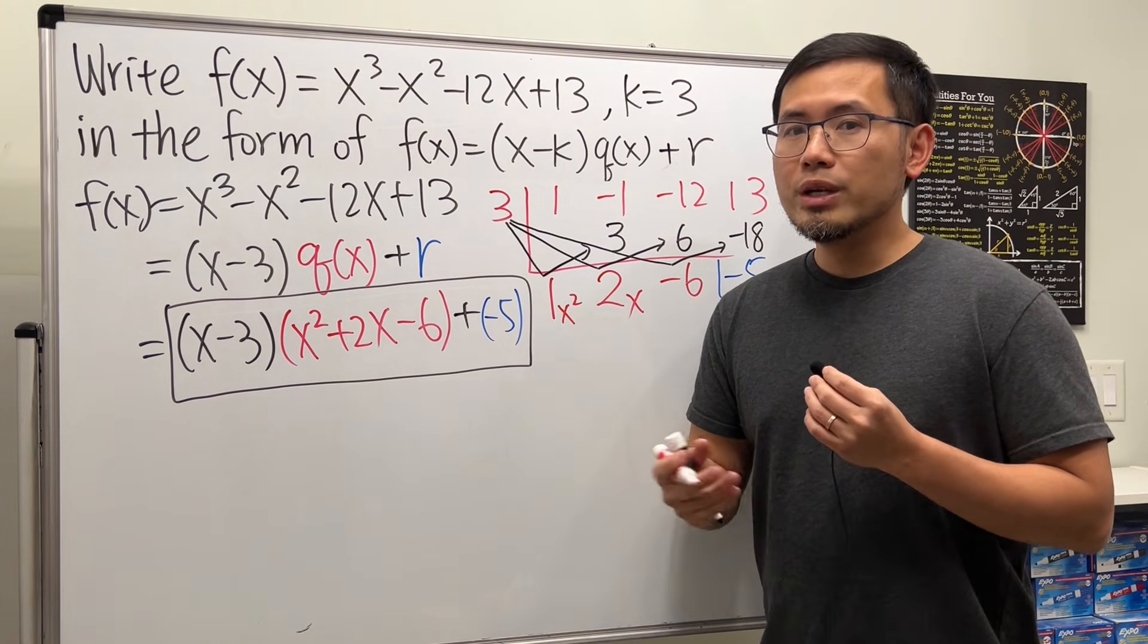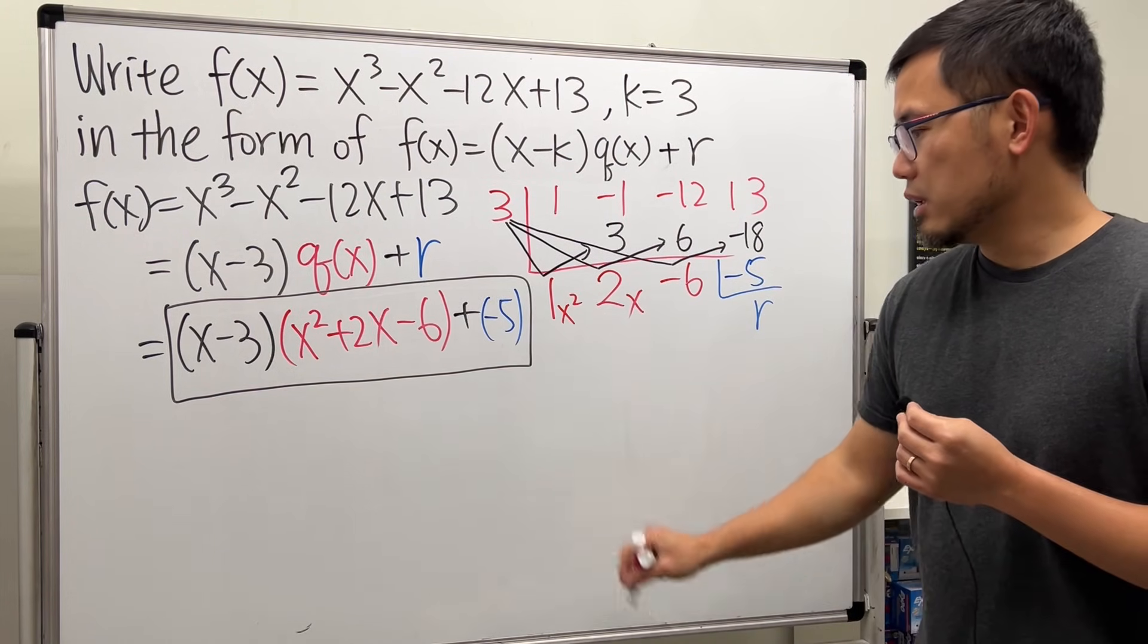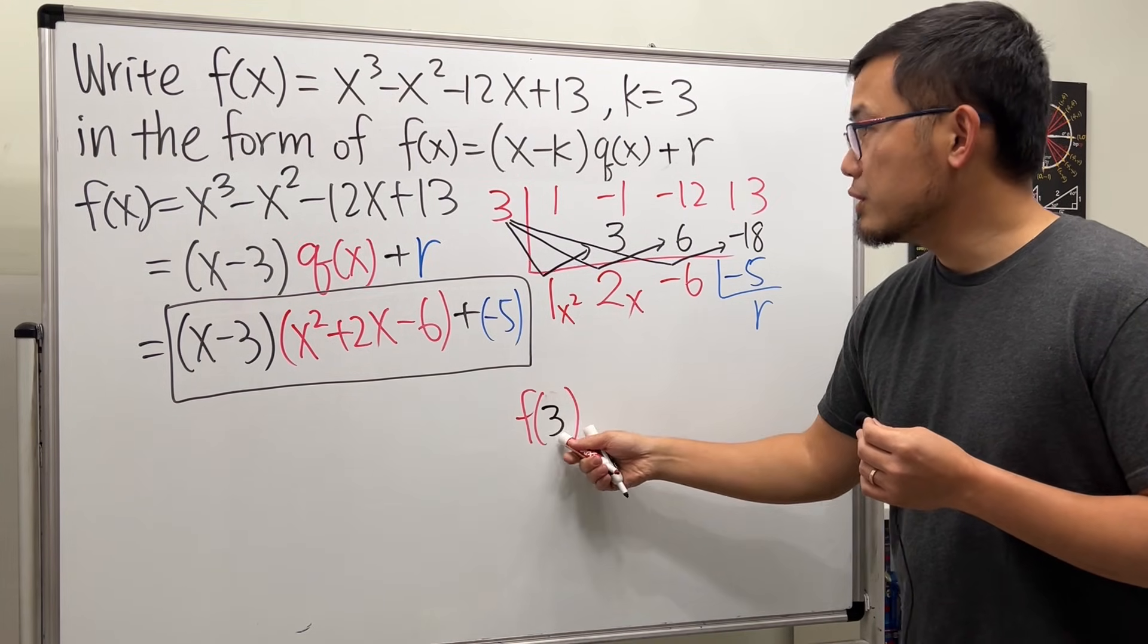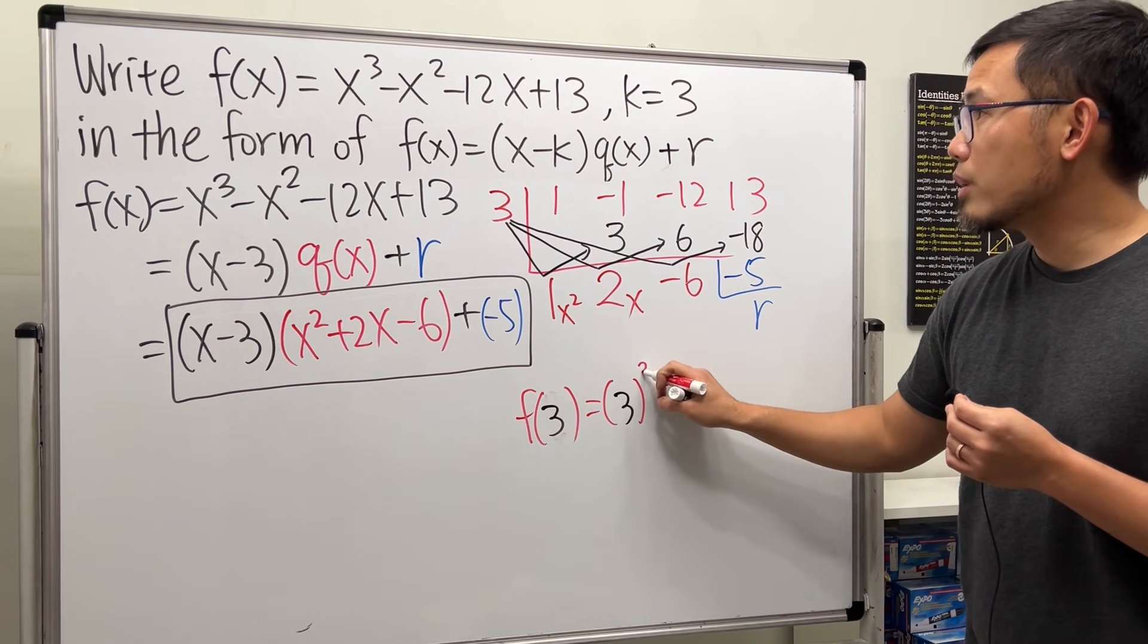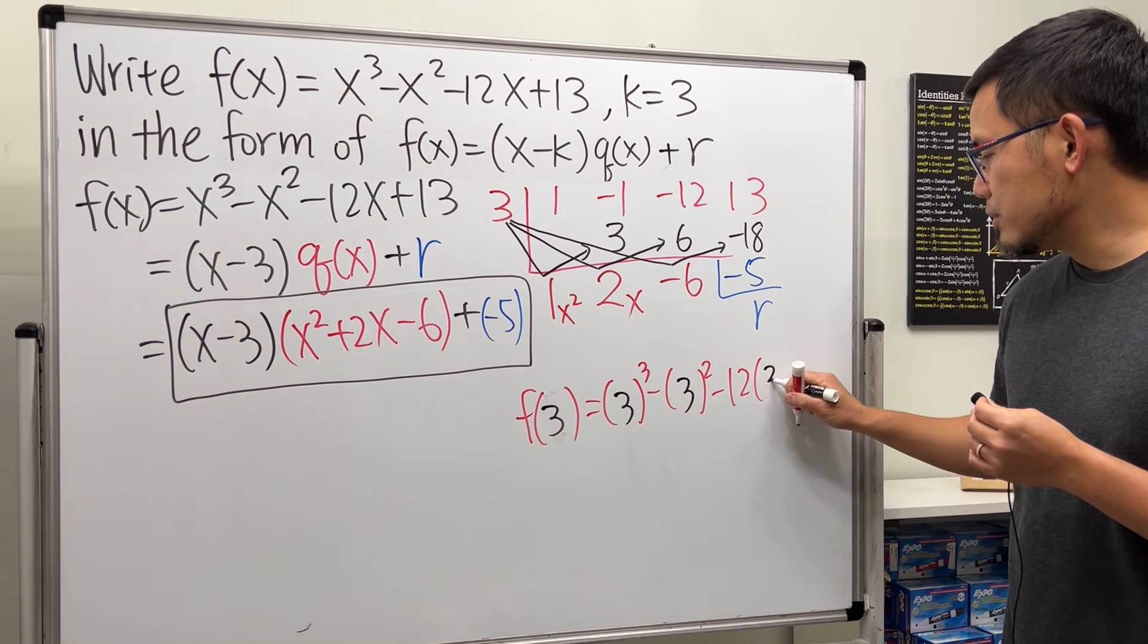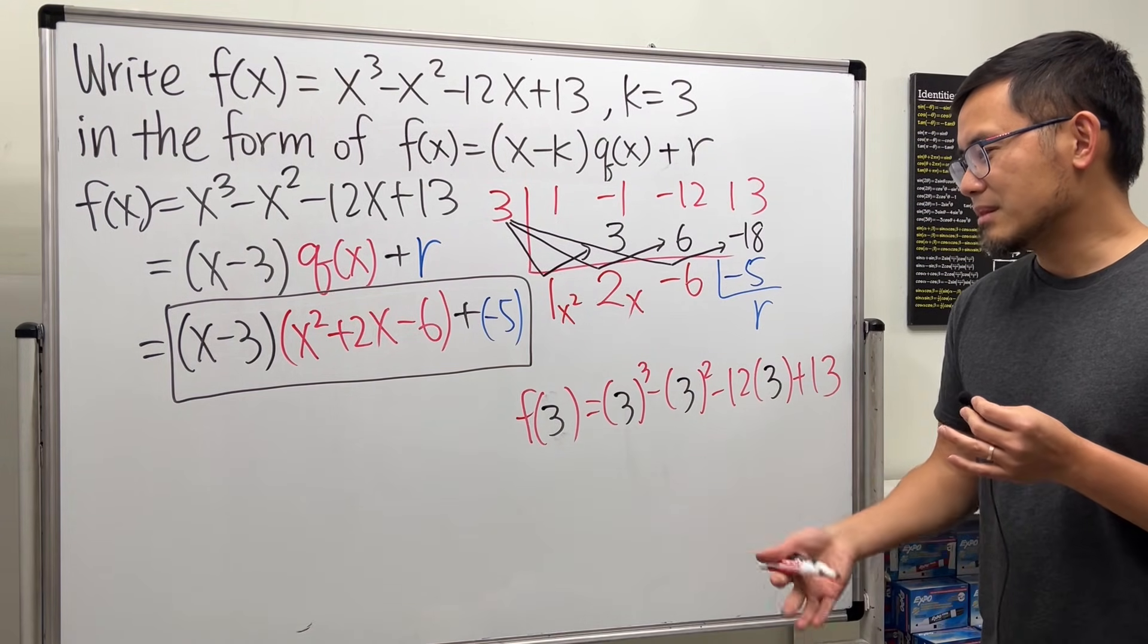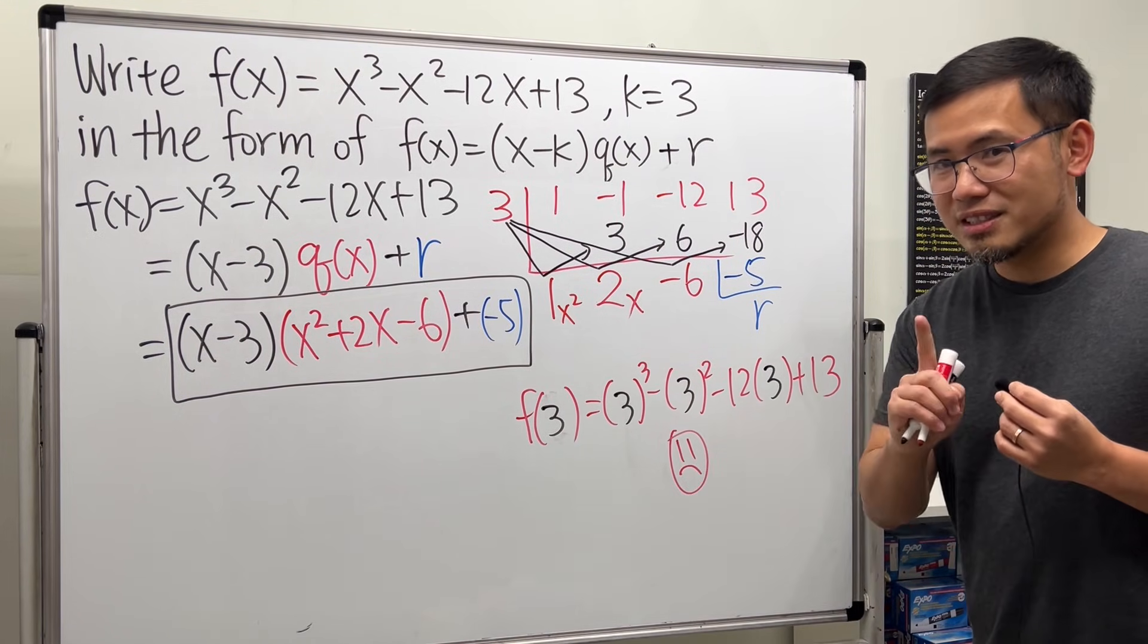And now let's talk about why we want to use this form right here. The next part of the question says we are going to evaluate f of 3, right? So this is how you normally would do it. If you want to find f of 3, you will have to put the 3 into all the x's here. So it looks like we have 3 to the 3rd power minus 3 squared minus 12 times 3 and then plus 13. Yeah, it has a lot of numbers and the order of operations sometimes might be tricky and all that. So not the best.